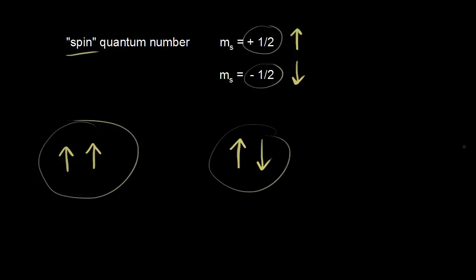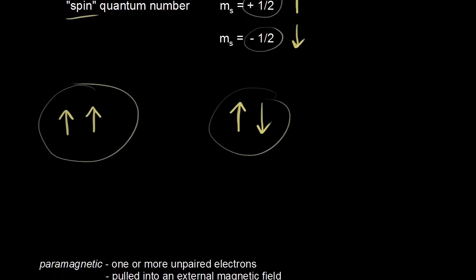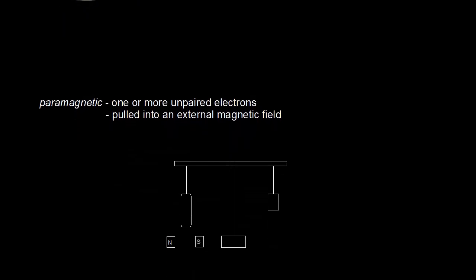Let's get some better definitions for paramagnetic and diamagnetic. Something that is paramagnetic has one or more unpaired electrons — like a tiny magnet with its own magnetic field. A paramagnetic substance is pulled into, or attracted to, an external magnetic field.